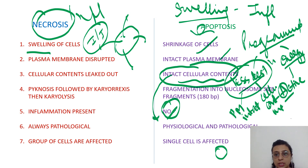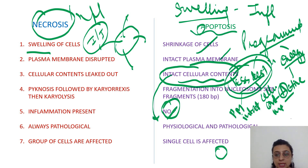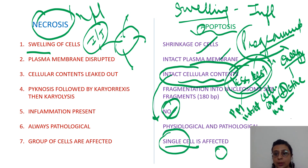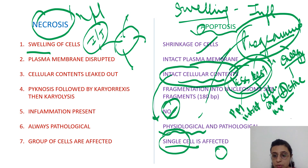Apoptotic bodies are formed in apoptosis because there is less destruction. Only a single cell is affected. Less destruction — planned — you can remember it as a physiological process.